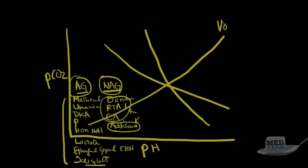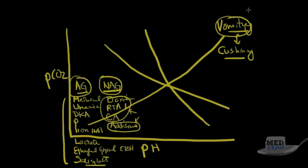Metabolic alkalosis can be caused by vomiting, where you lose chloride. Cushing's disease — too much adrenocortical hormones — also causes metabolic alkalosis. The key difference is that vomiting responds to saline (sodium chloride) and is chloride-responsive, whereas Cushing's disease is chloride-insensitive and will not respond to sodium chloride.